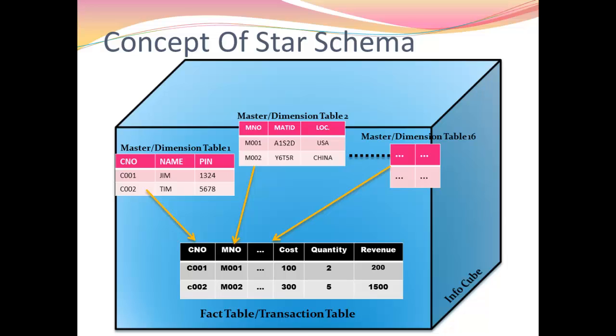Now there are disadvantages of this star schema. Since our master table is inside the cube, it has reduced reusability. For example, if we have another cube which requires the same master data for its fact table — though it has a different fact table — since this master table is inside our cube, we won't be able to use it. So this is one of the disadvantages.